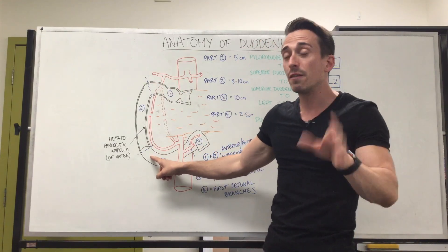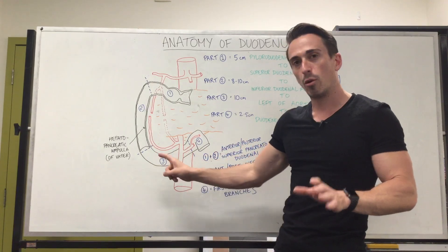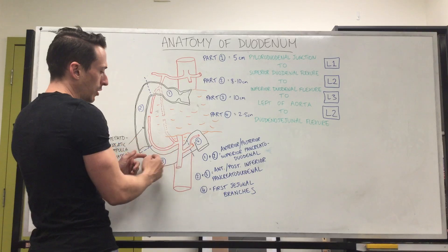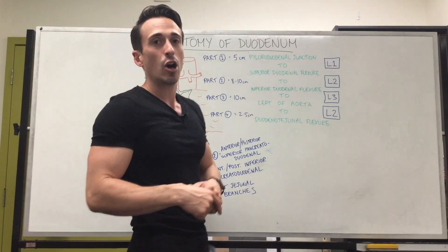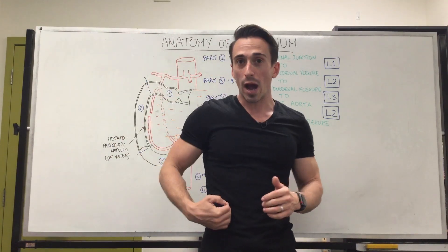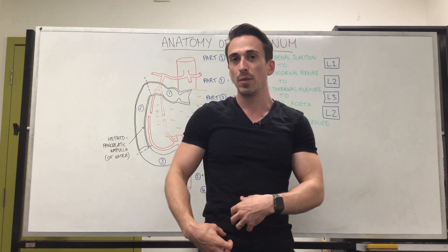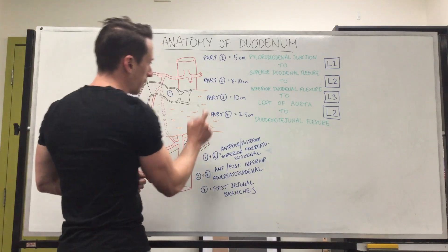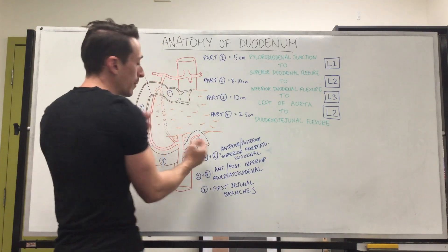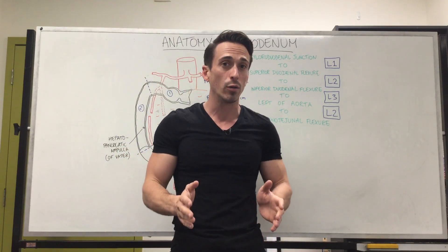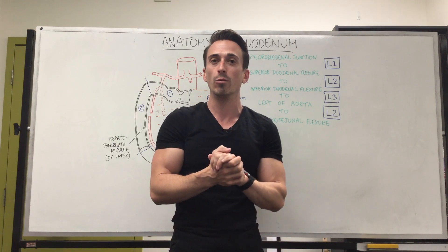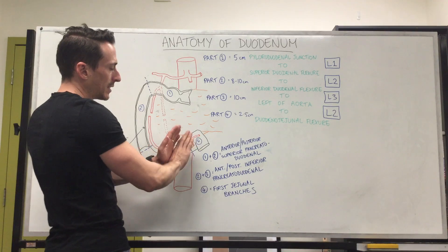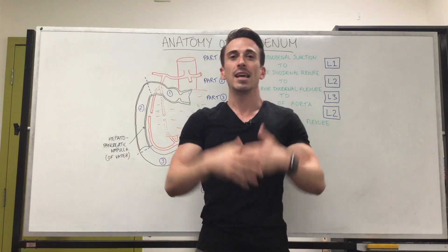Moving down from the inferior duodenal flexure is the third portion, which goes all the way across and is around 10 centimeters long. It sits in front of important structures including the right ureter, the right psoas muscle, and the right gonadal vessels. The fourth portion is about 2.5 centimeters long. Adding all four parts together gives around 25 centimeters — about 12 inches, or 12 fingertips wide — which is actually what 'duodenum' means: 12 fingertips wide. The fourth segment then turns into the jejunum, sitting to the left of the aorta.